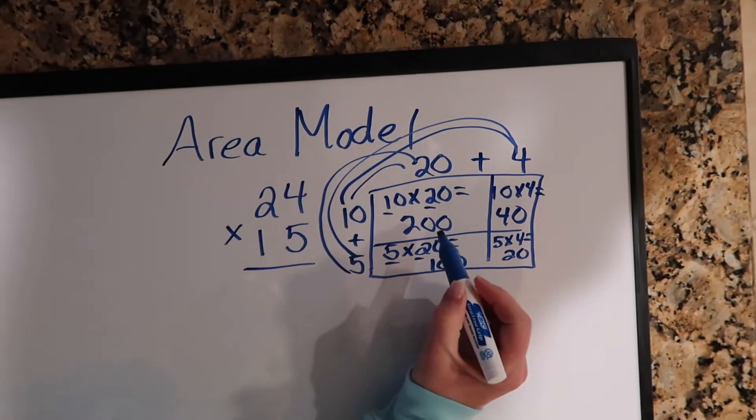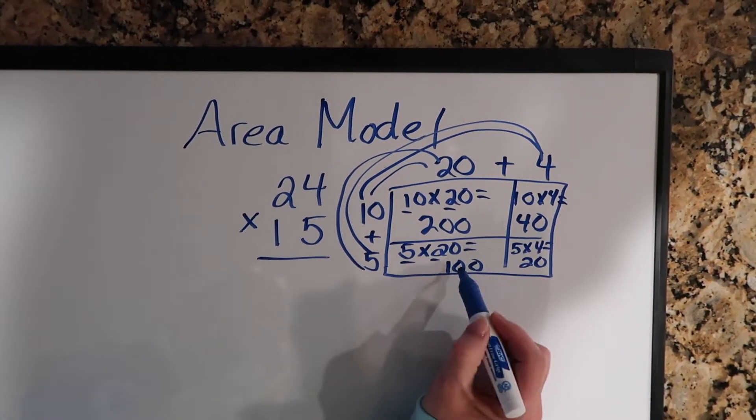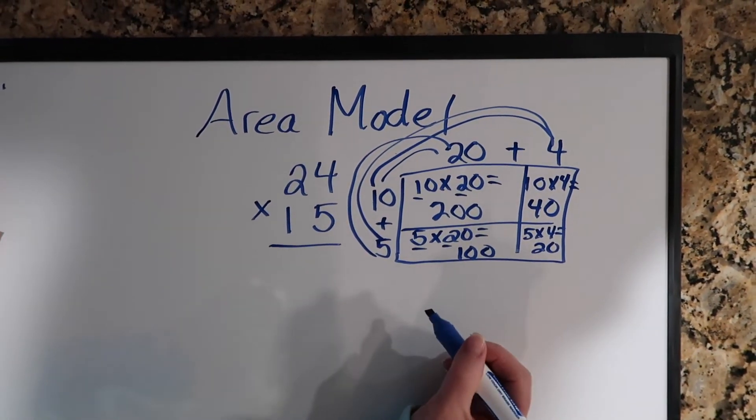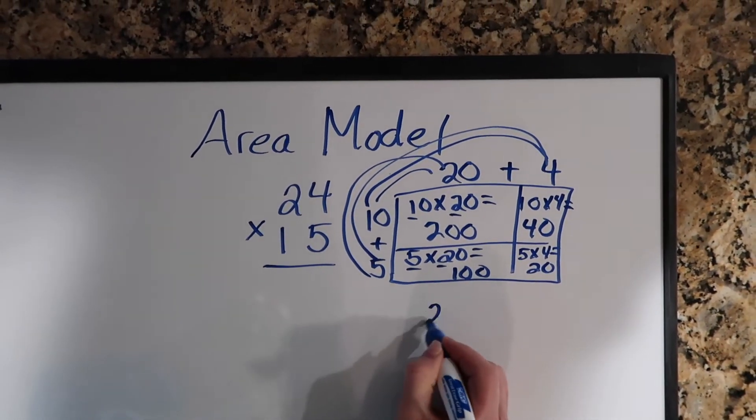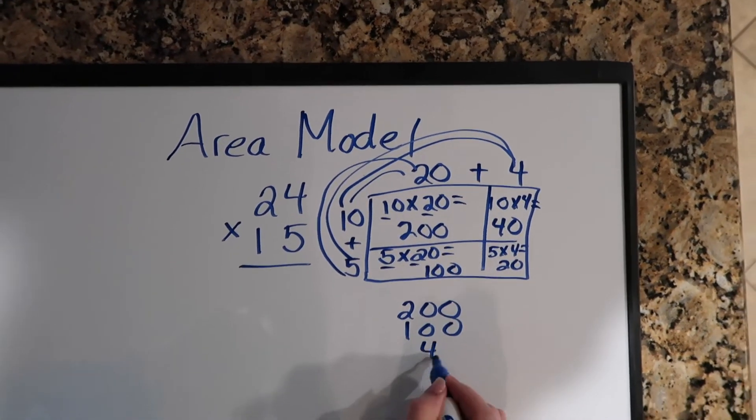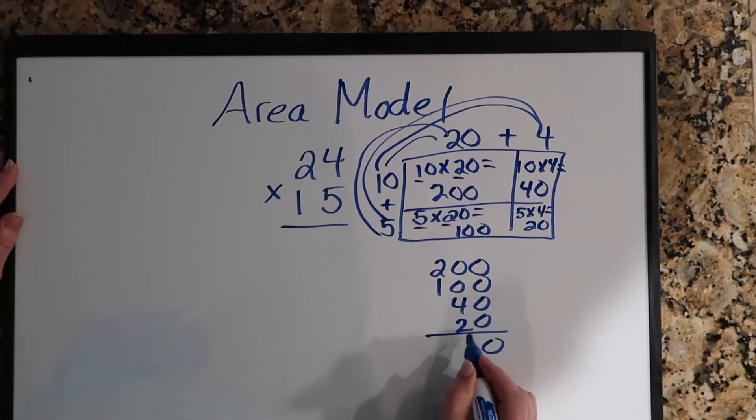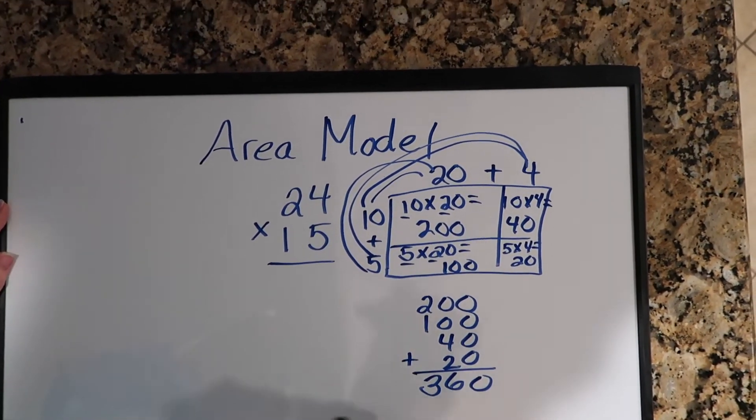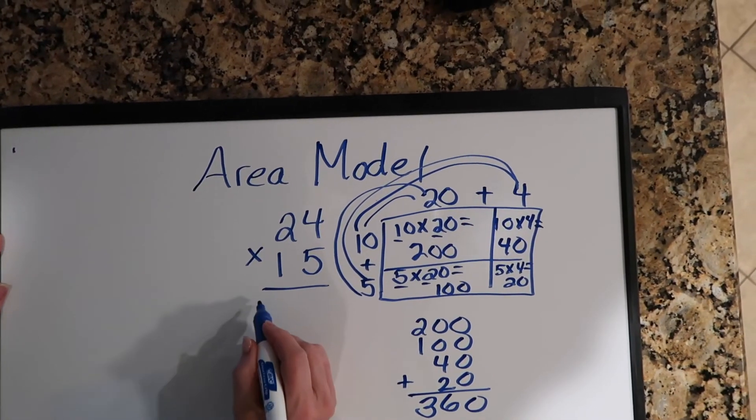And boys and girls, everybody knows what these are called. Well, they're called partial products because they are part of the answer, but they're not the product. So we're going to take those partial products and we are now going to add them. And when we add them, our product is 360.